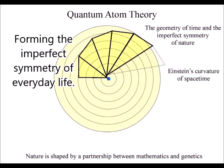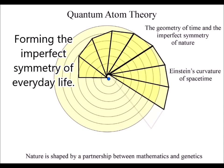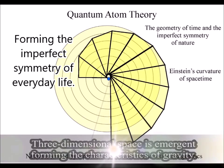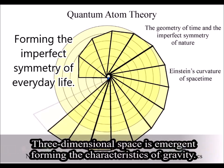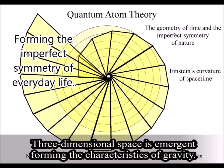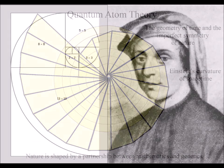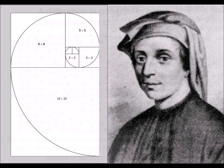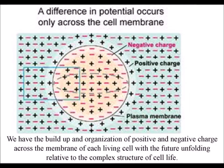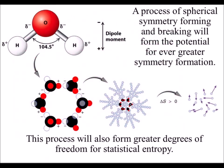When the spherical symmetry breaks, it has the potential to form the most beautiful geometrical shape in the form of the Fibonacci spiral, with the potential for evermore greater symmetry formation, forming the broken symmetry of cell life. This process also forms the potential for disorganization, forming greater degrees of freedom, for what we call entropy in physics.